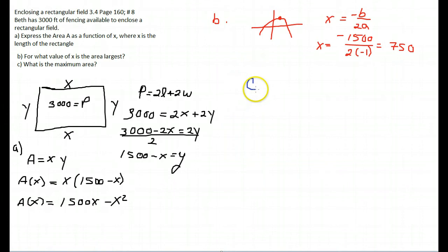Part C has us taking our equation, in place of the X, we put 750. So, A of 750 equals 1,500 times 750 minus 750 squared.